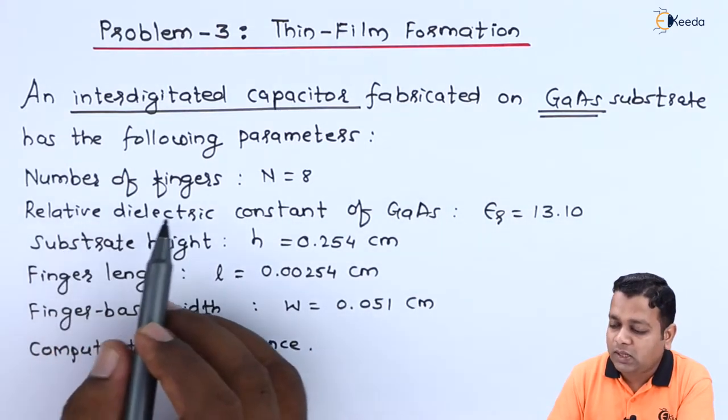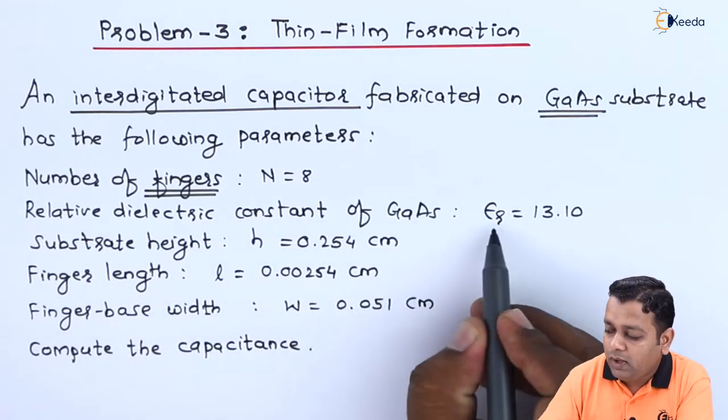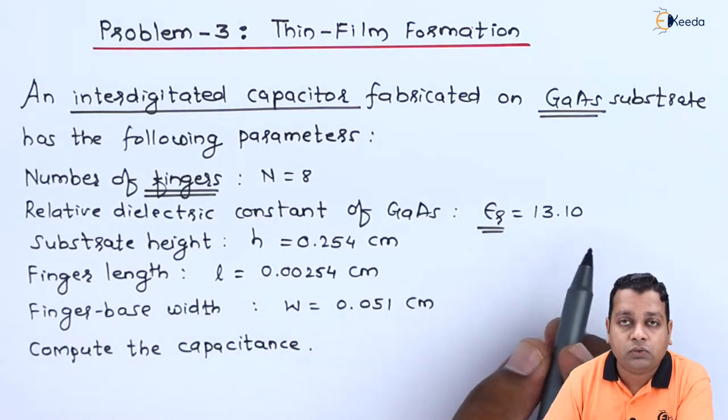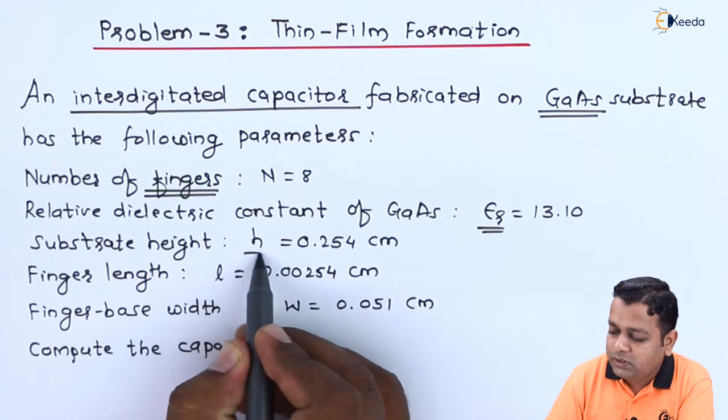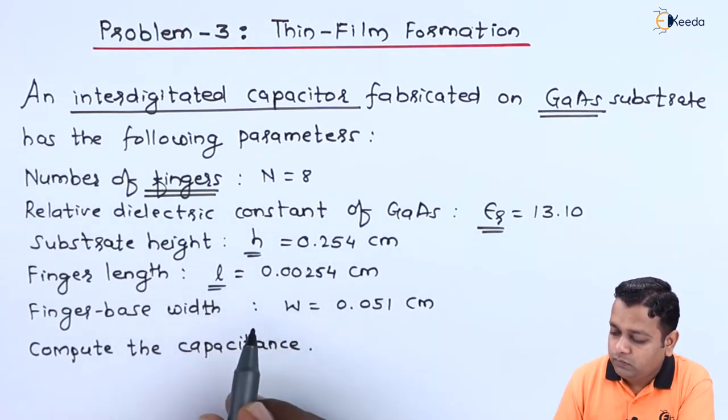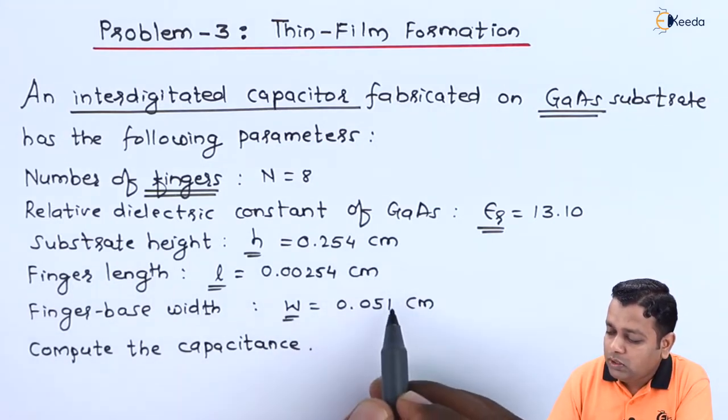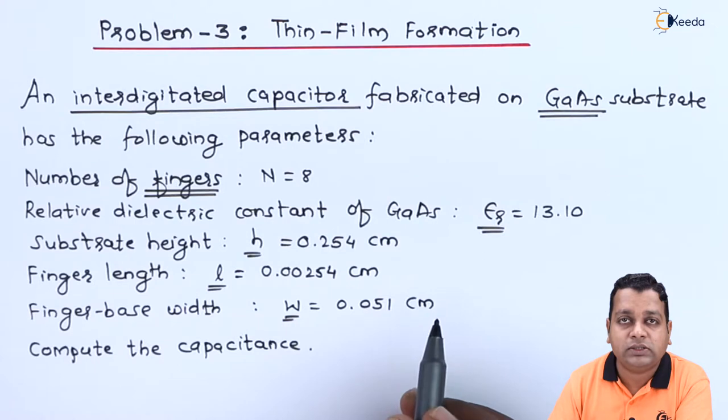The given details are number of fingers are 8, the relative value of dielectric constant is equal to 13.10, substrate height is also there, the finger length is also there, the finger base width is also there. So all these dimensions are into the centimeters.